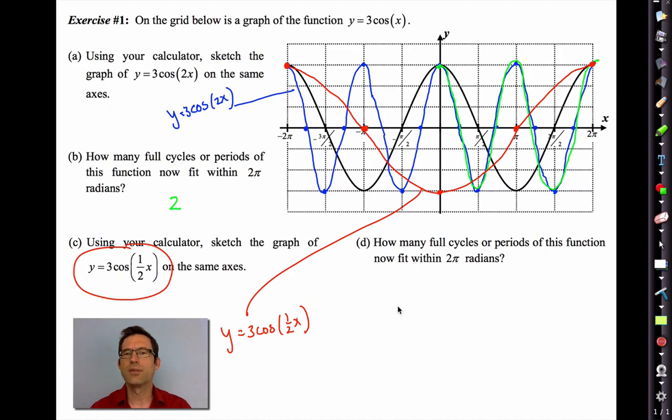How many full cycles or periods of this function now fit within 2π radians? Think about this. This time, it would only be half of a cycle. Here's 2π radians, from 0 to 2π is 2π radians, and I'm only getting half a cycle in there. I get the full cycle in 4π radians. Maximum to maximum is a good way to measure it. So we can get half of a cycle in now. It's like it slows it down or stretches it out in this case.